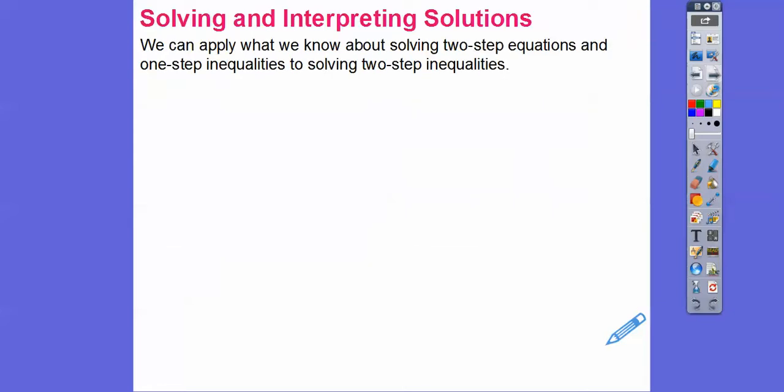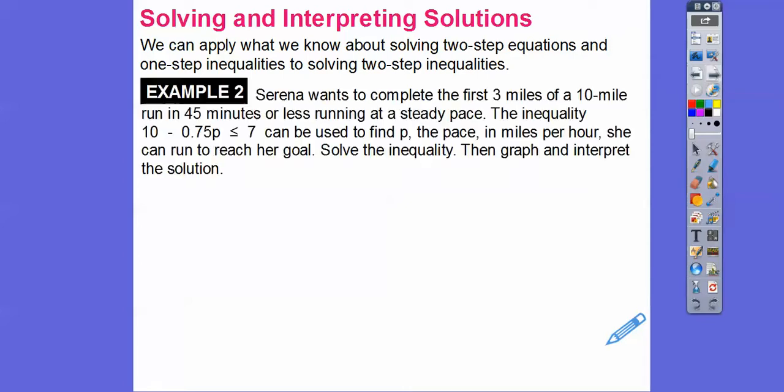We can apply what we know about solving two-step equations and one-step inequalities to solve two-step inequalities. Everything is the same as when we solve equations, except when we multiply or divide by a negative number — that's the only time it flips the inequality.